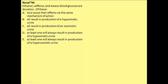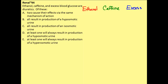In number 44 in the renal problem set, we are asked to compare the effects of three different diuretics on the body. We're going to be looking at ethanol and comparing it with caffeine, and then the last diuretic we'll be looking at is excess blood glucose.